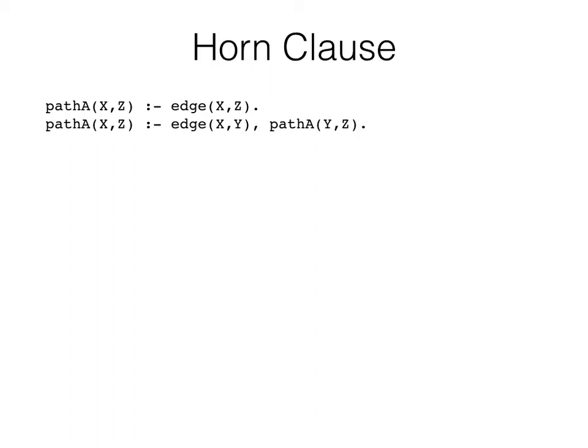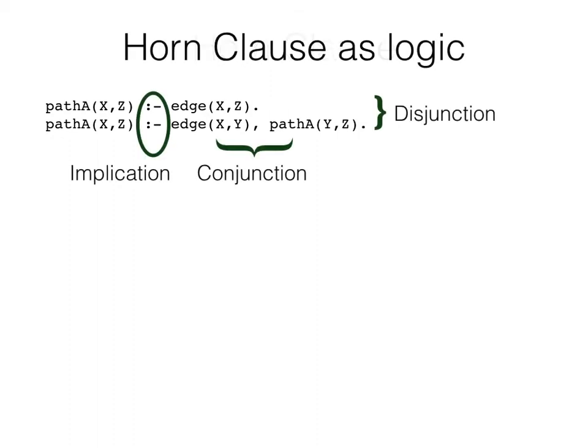Yetilog, like Datalog and Prolog, is a horn clause logic programming language. All of these languages share the syntax of the horn clause and its meaning as logic, in which multiple rules of a predicate are an OR, the multiple goals in a body are an AND, and the colon-hyphen is an implication. There is a path from x to z if there's an edge from x to z, or there's an edge from x to some y and there's a path from that y to z.